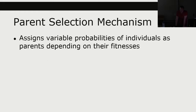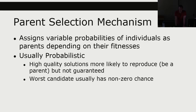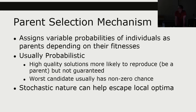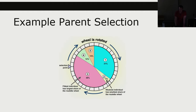The parent selection mechanism assigns variable probabilities to individuals depending on their fitness — usually probabilistic, so higher quality solutions are more likely to reproduce but it's not guaranteed. Every individual in the population has some chance of reproducing even if close to zero. This stochastic nature helps escape local optima. The algorithm we'll be using for our assignment is called roulette wheel selection, where you take the fitness of every individual and plot it on a wheel like a pie chart.